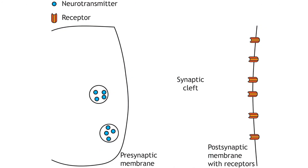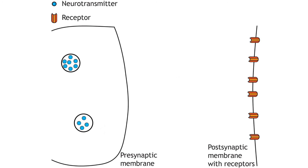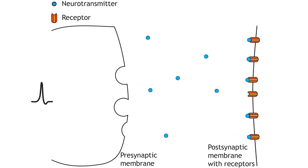Chemical synapses do not form physical connections between the pre- and postsynaptic neurons. Instead, a space called the synaptic cleft exists between the presynaptic terminal and the postsynaptic membrane. Neurotransmitters are stored in the presynaptic cell, and the postsynaptic cell has neurotransmitter receptors in the membrane. At a chemical synapse, the depolarization of an action potential reaching the presynaptic terminal causes release of neurotransmitters, which act on specialized receptors located in the cell membrane of the postsynaptic neuron. The structure and function of chemical synapses make them slower than electrical synapses and permit signaling in only one direction.